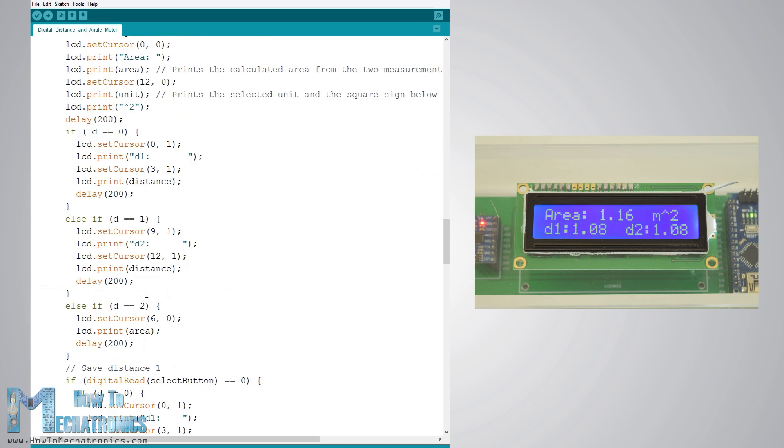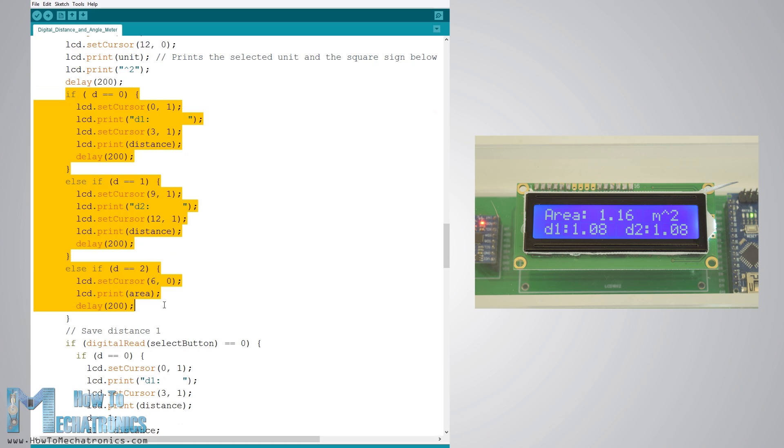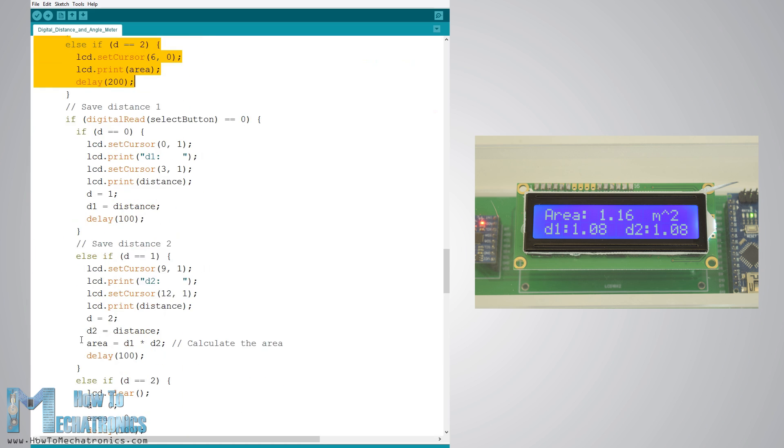Next is the program for calculating area in which we are using similar methods. We need to take two perpendicular measurements and simply multiply them in order to get the area of the square that they form.